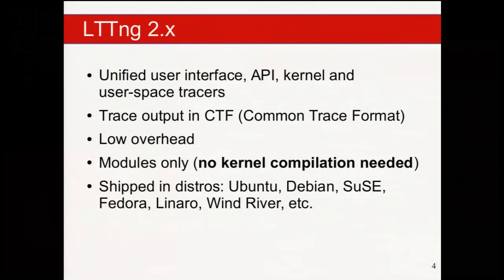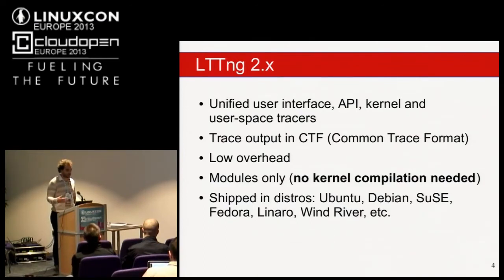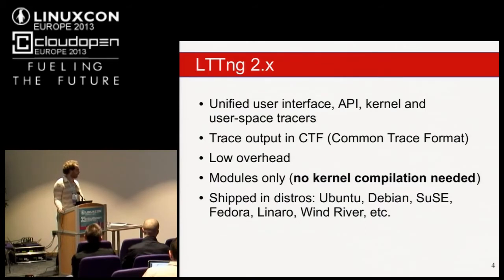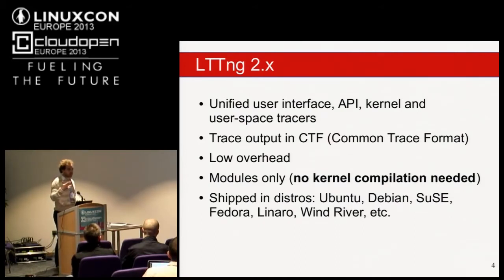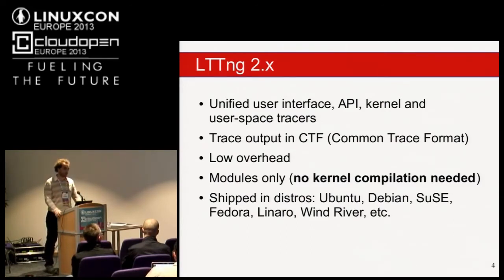LTTng 2.x — if some of you knew LTTng before the 2.0 release, it's a whole new set of tools and features. The main point of LTTng 2.x was to have CTF (Common Trace Format) output for writing the trace, and a common user interface to interact with the tracer. It's a kernel and user space tracer, so you can record both traces simultaneously and combine them during analysis.